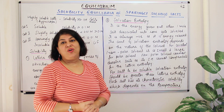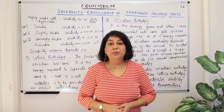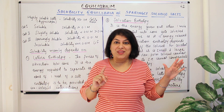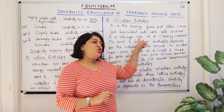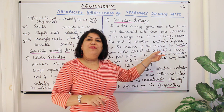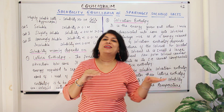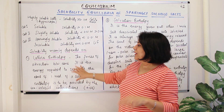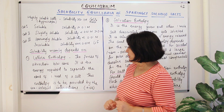Solvation enthalpy is always negative because solvation always leads to stability and a release of energy. A salt that has very high lattice enthalpy but low solvation enthalpy will not dissolve, because the process leads to stability only if the solvation enthalpy is greater than the lattice enthalpy. The energy released must exceed the energy provided, so that on the whole the salt and solution acquire a lower energy, stable state. So for the salt to be soluble, solvation enthalpy should always be higher than the lattice enthalpy.